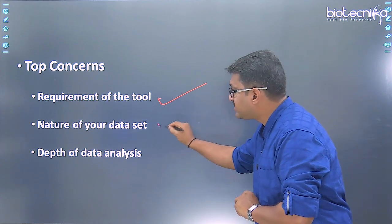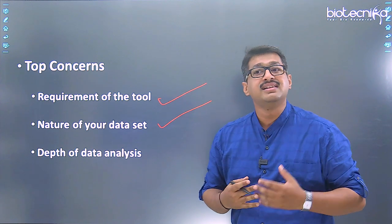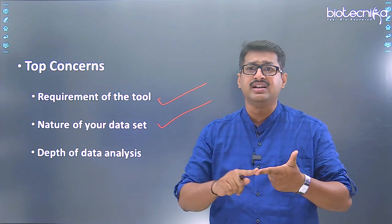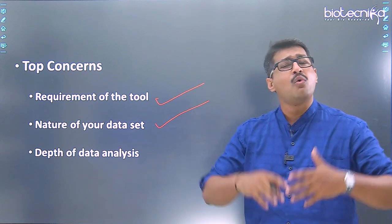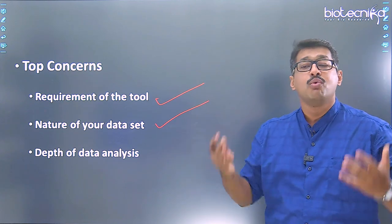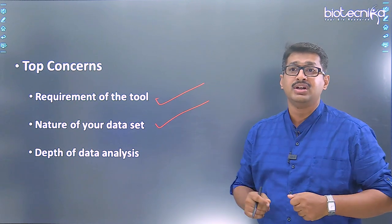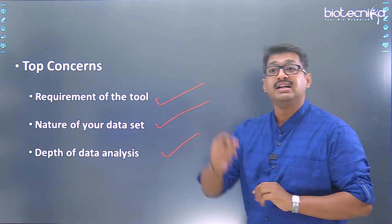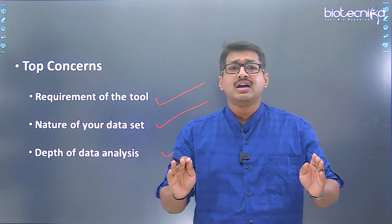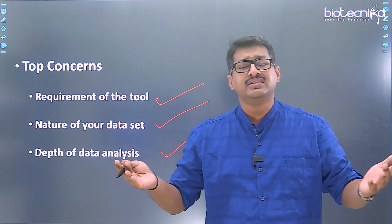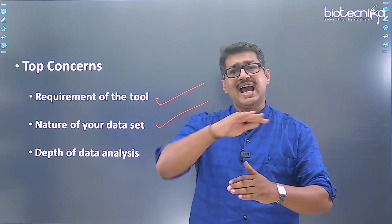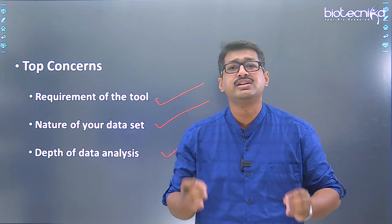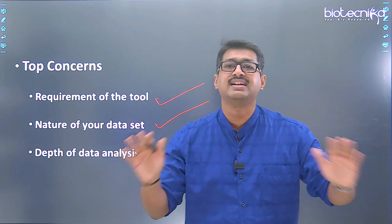The next important component is: what exactly is the nature of your dataset? Whether you are handling a proteome database, genome sequencing, RNA-seq, microbiome sequencing, HiSeq, MySeq, or Illumina — the nature of your data plays a very important role. The third concern is the depth of data analysis required. At primary stages, it is not necessary that you need data at its core; a superficial analysis may still enable interpretation for basic understanding.